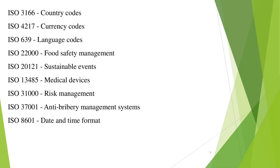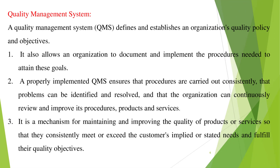Our target today is to understand ISO 9000, that is quality management — how quality can be managed in a corporate organization. ISO 9000 deals with quality management while ISO 14000 deals with environmental management. To start with ISO 9000, we first need to understand the Quality Management System, or QMS. A quality management system defines and establishes an organization's quality policy and objectives.